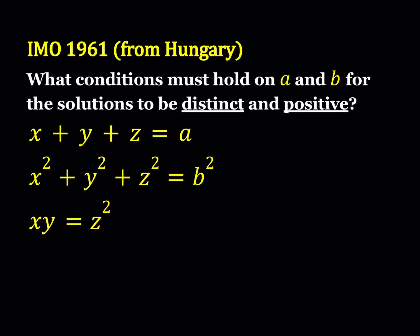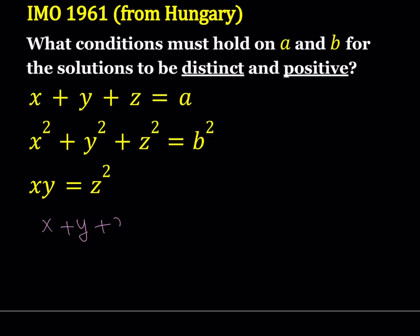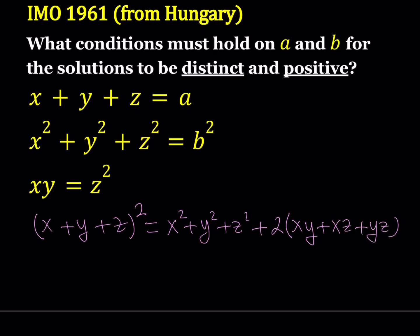We have the sum X plus Y plus Z equals A, the sum of squares, and the product XY. I'm going to take X plus Y plus Z and square it. When I square this I get X squared plus Y squared plus Z squared plus two times the quantity XY plus XZ plus YZ. We know X plus Y plus Z equals A, so this will be A squared, and the sum of squares is B squared. I'll be using Vieta's formulas — I have a separate video on those linked below. From here I can find the sum of pairwise products.